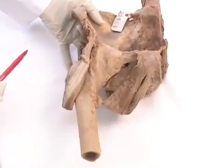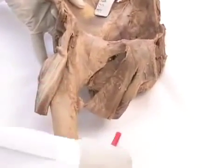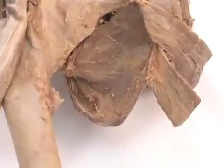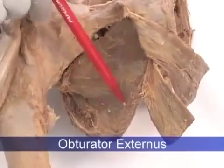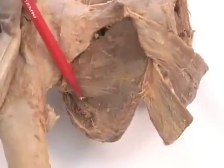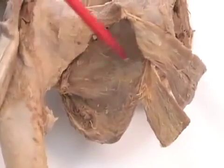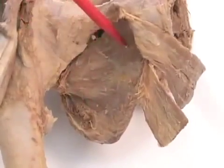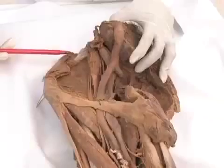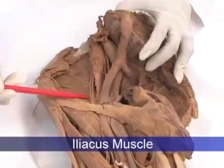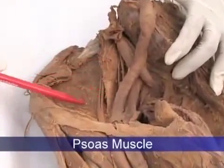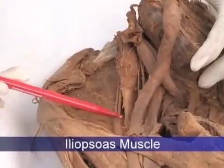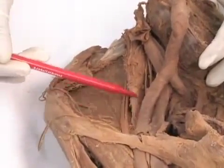On this anterior aspect of the pelvis, the obturator externus muscle can be seen — it is also a lateral rotator of the hip joint, covering the obturator foramen. This is the iliacus muscle and this is the psoas muscle; together they form the iliopsoas and attach on the lesser trochanter. This is a powerful flexor of the thigh.